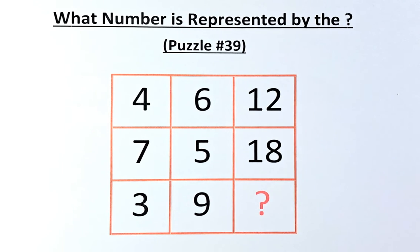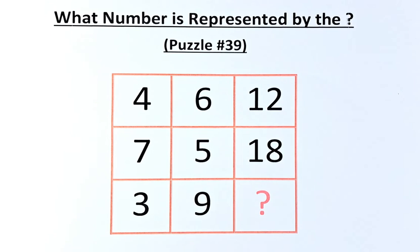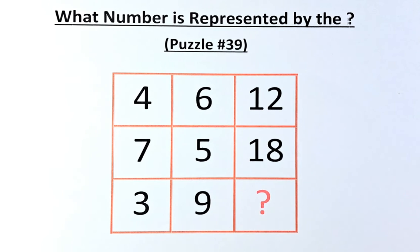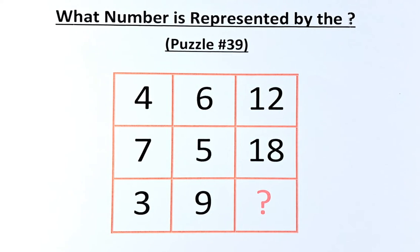The numbers in the puzzles are as follows. In the first row, we have 4, 6 and 12. In the second row, we have 7, 5 and 18. And in the final row, we have 3, 9 and the question mark.